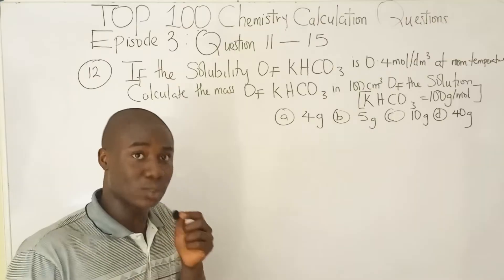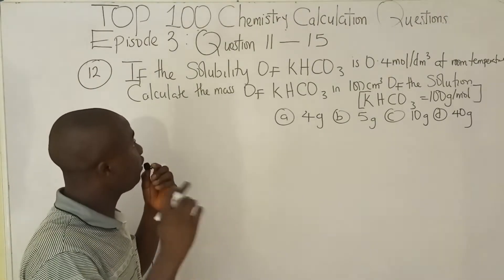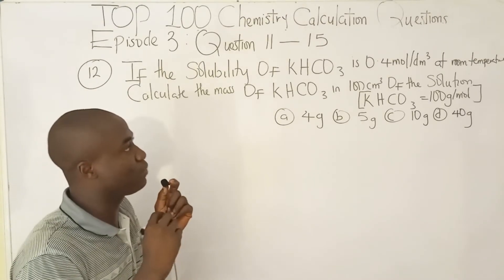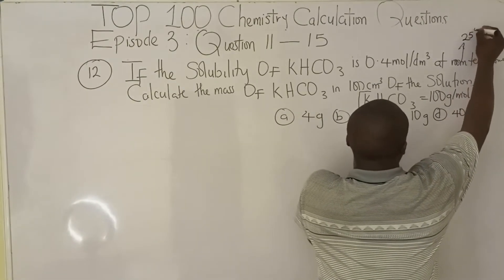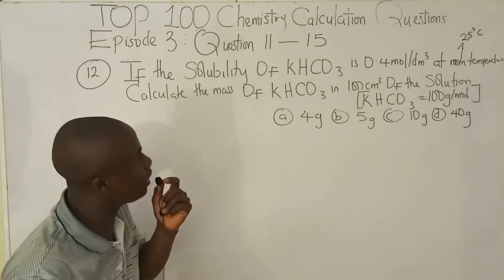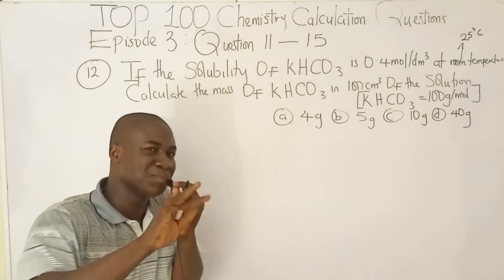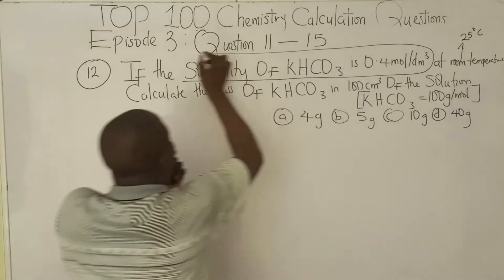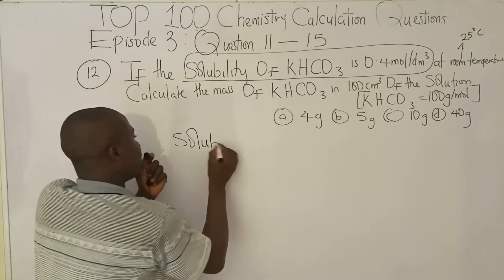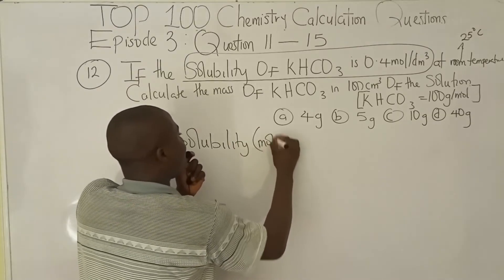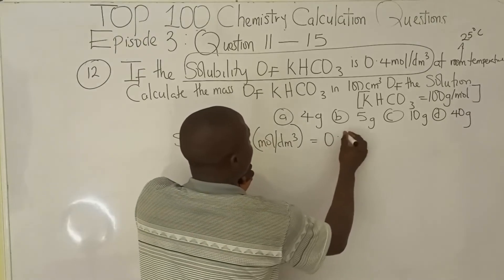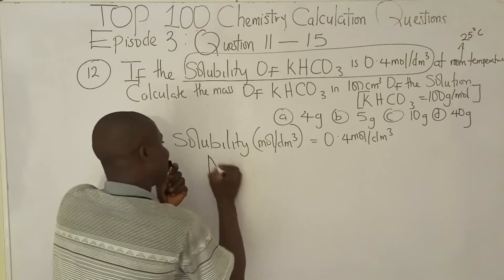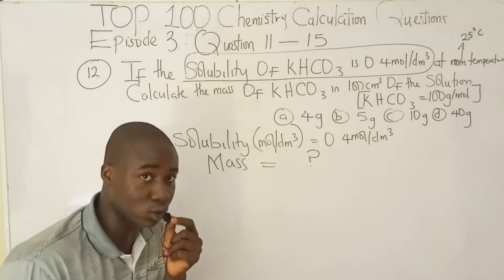Now let's move to question 12. It says: if the solubility of KHCO₃ is 0.4 moles per dm³ at room temperature — which is 25 degrees Celsius — calculate the mass of KHCO₃ in 100 cm³ of the solution. They gave us solubility in moles per dm³, and they are asking us to get mass.